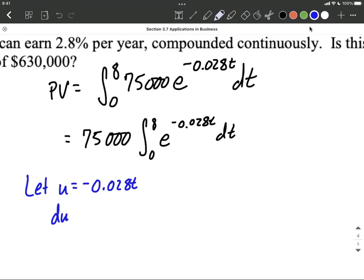Next, we'll take DU on both sides, or take the derivative, and we'll get negative 0.028, and then we'll put a DT on this other side.